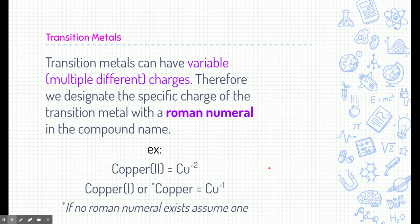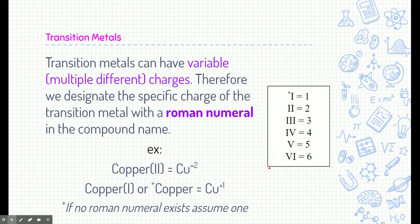If we see a transition metal or other metal with no Roman numerals given, we can just assume a charge of one. For Roman numerals, you'll only need to know one through six for chemistry. You're encouraged to write these on your periodic table if you struggle with them.